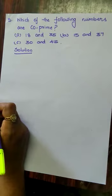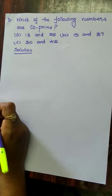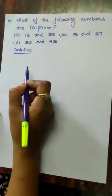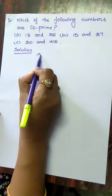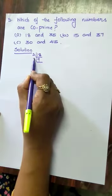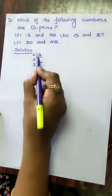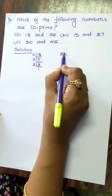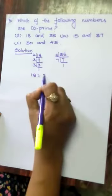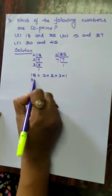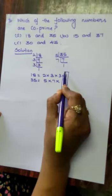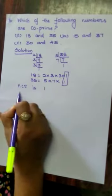Which of the following numbers are co-prime? If two numbers have only 1 as their common factor, they are co-prime. First subdivision: 18 and 35. 18 = 2 × 3 × 3 × 1. 35 = 5 × 7 × 1. The highest common factor is 1, so 18 and 35 are co-prime.